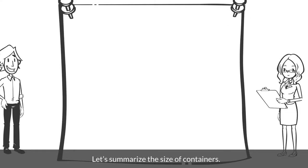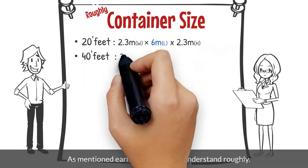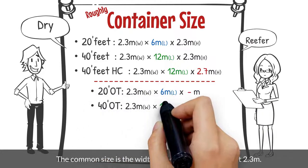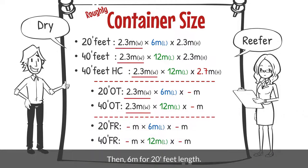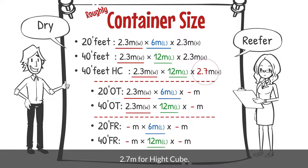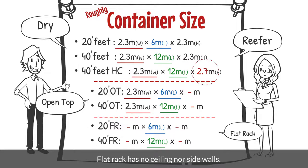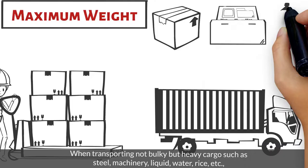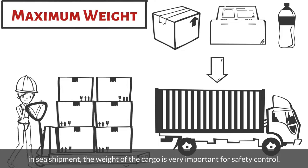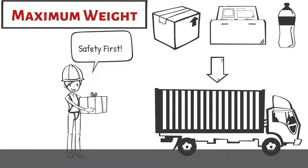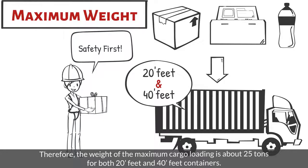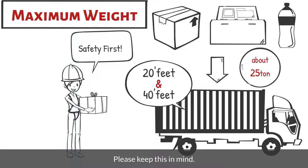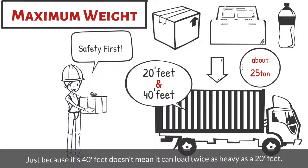Let's summarize the size of containers. Please try to understand roughly — there are only four key numbers that come up. The common width of containers is about 2.3 meters. Then, 6 meters for 20-feet length, 12 meters for 40-feet length, and 2.7 meters for the high cube height. Open top has no ceiling; flat rack has no ceiling nor side walls. Maximum loading weight is also important. When transporting heavy cargo such as steel, machinery, liquid, or rice in sea shipment, the weight of the cargo is very important for safety control. The maximum cargo loading weight is about 25 tons for both 20-feet and 40-feet containers — just because it's 40-feet doesn't mean it can load twice as heavy as a 20-feet.